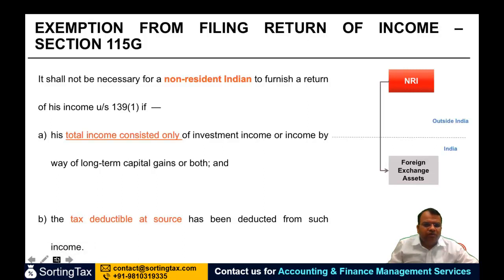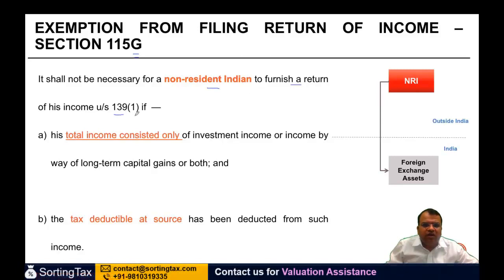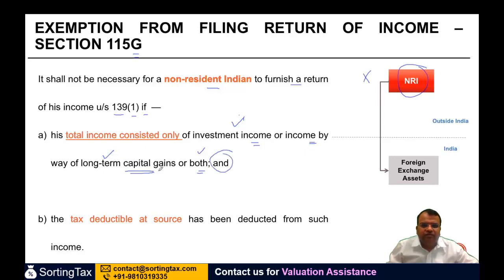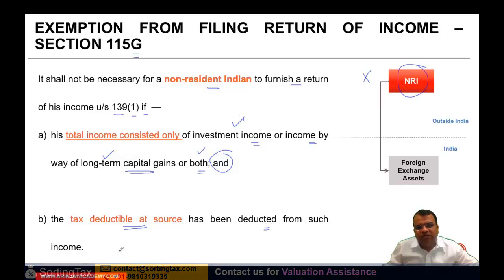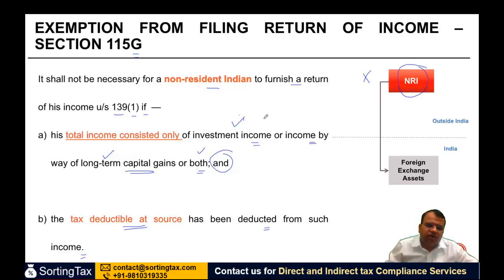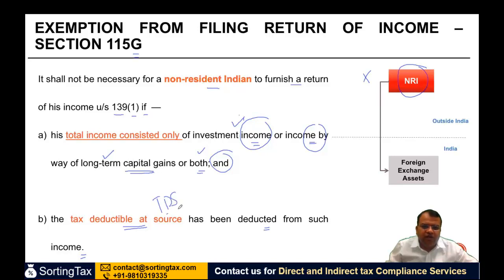Exemption from filing of return of income. This is covered in section 115G. It shall not be necessary for an NRI to furnish a return of income under section 139 if the total income consisted only of investment income, or income by way of long-term capital gain, or both, and the tax deductible at source has been deducted from such income. So if your income was only investment income or long-term capital gain covered under this chapter, and TDS was deducted, then you are not required to file a return of income.